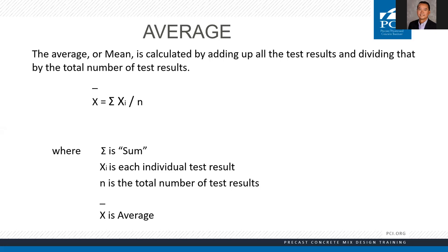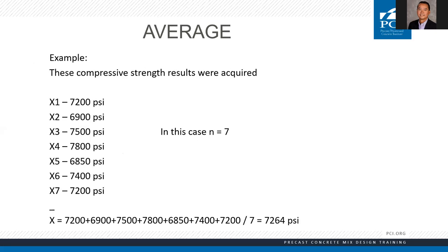Calculating average — we all know how to do this, but I wanted to put the equation there so you're not so intimidated by the equations you'll see when we get to the standard deviation. Average is pretty simple: it's the sum of all the individual tests divided by the number of tests. Here's an example with seven tests. We add all those up, divide by seven, and the average is 7,264 PSI compressive strength.